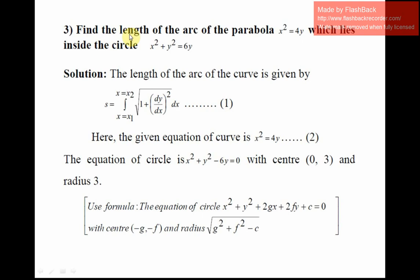Next example: find the length of arc of the parabola x² = 4y which lies inside the circle x² + y² = 6y. The length of arc formula with respect to x is s = integral from x₁ to x₂ of √(1 + (dy/dx)²) dx — equation number 1. The parabola is equation number 2: x² = 4y. The circle is x² + y² − 6y = 0, which has center (0, 3) and radius 3.